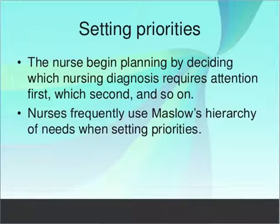For setting priorities, nurses frequently use Maslow's hierarchy of needs. Maslow's hierarchy model is also known as basic needs, psychological needs, or self-fulfillment needs, and according to these, interventions are set or planned.